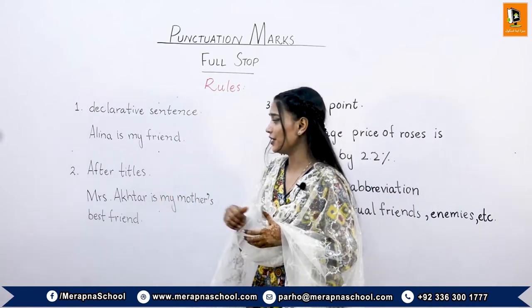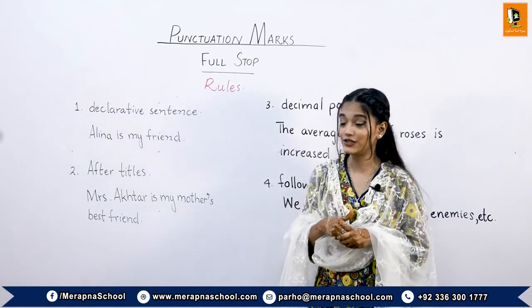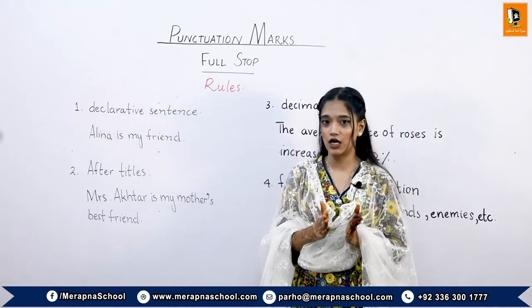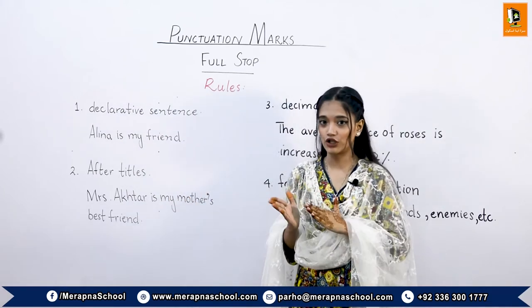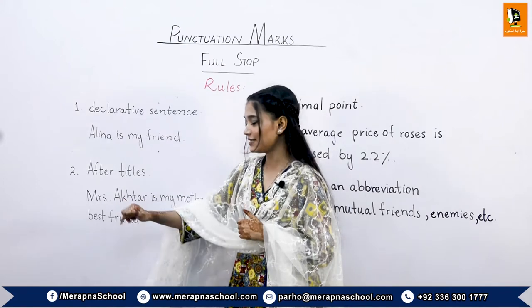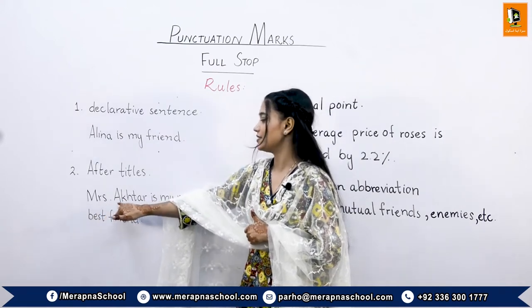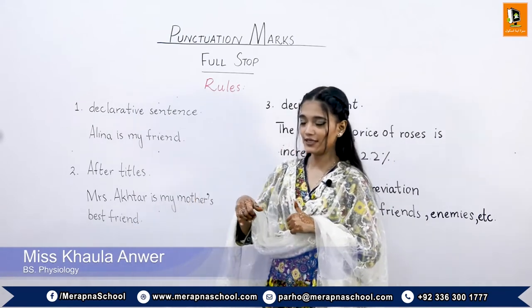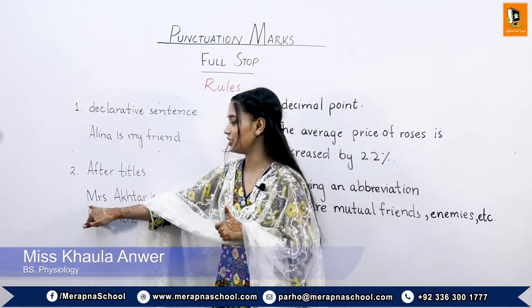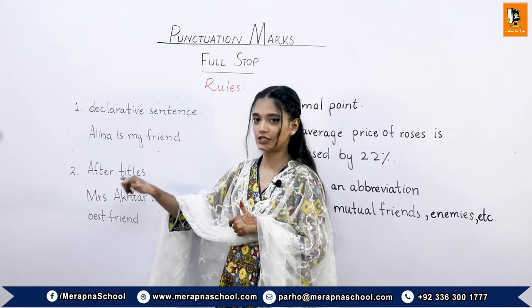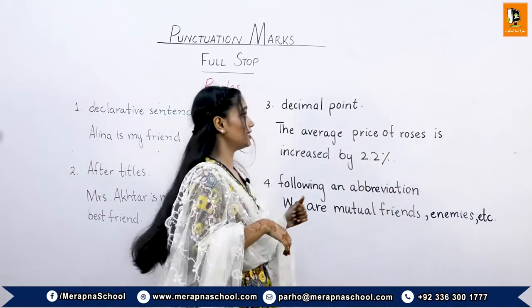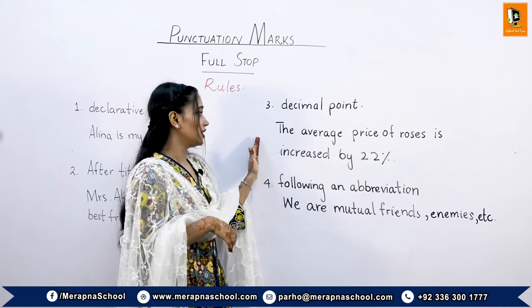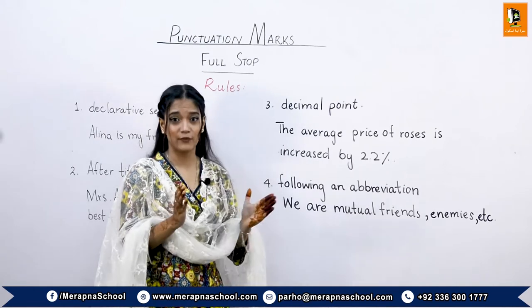The second rule is after titles. Titles can be Mr., Mrs., Sir, Doctor, etc. For example, in the sentence 'Mrs. Ahmed is my mother's best friend,' after the title 'Mrs.' we have put the full stop. The third rule is between decimal points — between numbers as a decimal point.